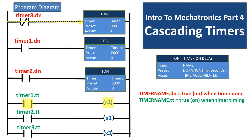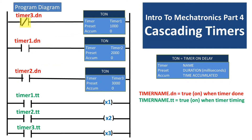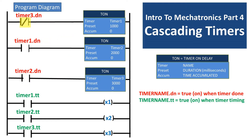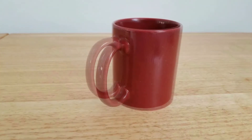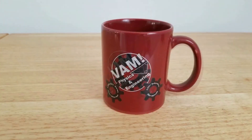So to reiterate, during the time the timer is on, it will keep the timer timing normally open contact true, which will turn on the output coils, which could be a light, motor, or other electrical device. This program will continually cycle through until the program is shut off. That concludes this video.